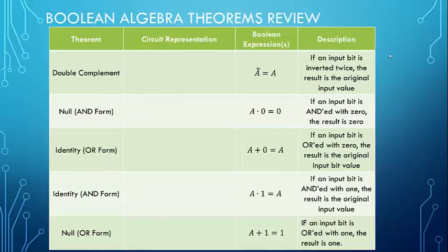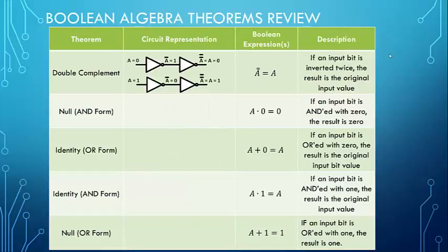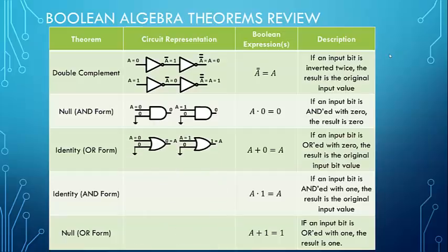Some other laws: the double complement law states that if we invert something twice, we end up back where we started. The null law in AND form says that if we AND something with zero, we get zero — ANDing with zero is zero, just like multiplying by zero. The OR form of the identity law says if we OR something with zero, nothing changes — analogous to adding zero. In the AND form, if we AND something with one, nothing changes — analogous to multiplying by one.